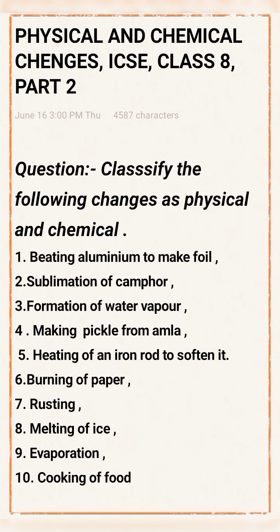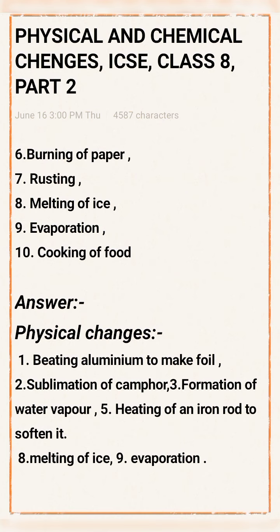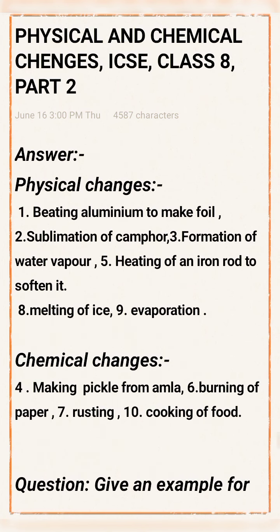Next question pattern: Classify the following changes as physical or chemical. 1. Beating aluminium to make foil. 2. Sublimation of camphor. 3. Formation of water vapor. 4. Making pickle from amla. 5. Heating an iron rod to soften it. 6. Burning of paper. 7. Rusting. 8. Melting of ice. 9. Evaporation. 10. Cooking of food. Physical changes include beating aluminium, sublimation, formation of water vapor, heating iron rod, melting of ice, and evaporation. Chemical changes include making pickle, burning of paper, rusting, and cooking of food.